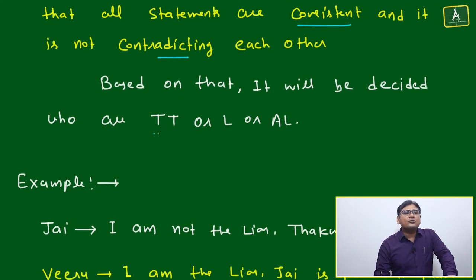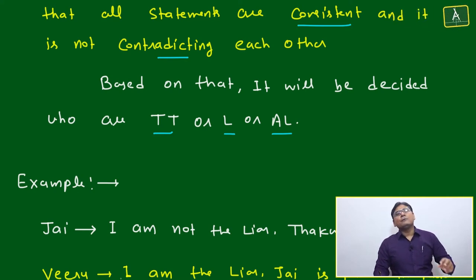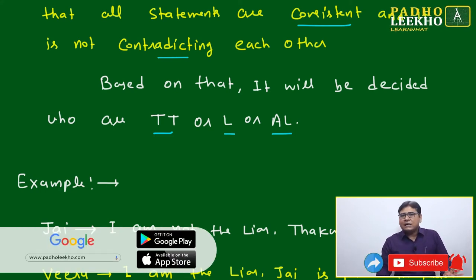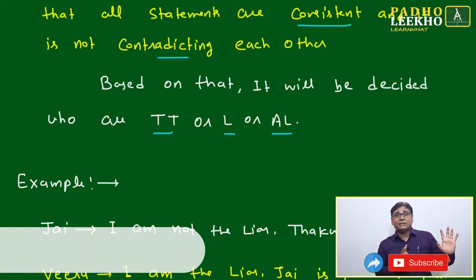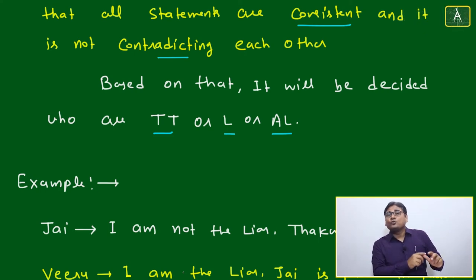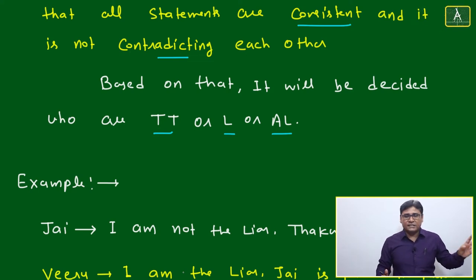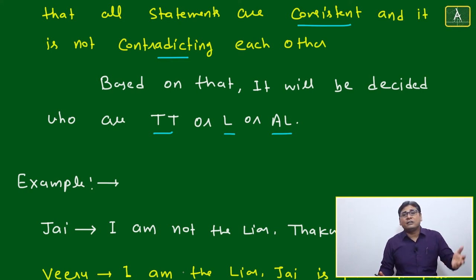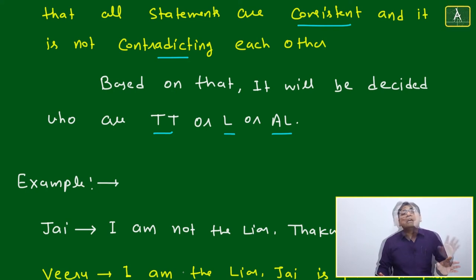A statement can only be true or false. You have to use hit-and-trial, common sense, and observation to check that all statements are consistent and not contradicting each other. Based on that, it is decided who is the truth teller, liar, or alternator. The question will ask you to identify who is the truth teller, liar, and alternator.